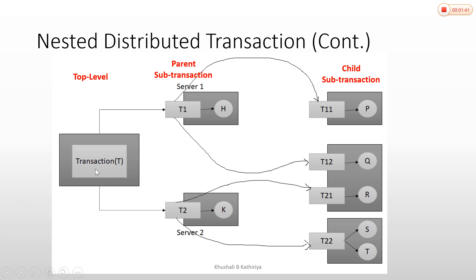Looking at the nested distributed transaction figure: the first one is the main transaction T at the top level. Transaction T is divided into two sub-transactions T1 and T2 — T is the parent transaction of T1 and T2. Now T1 is divided into T11 and T12, and T2 is divided into T21 and T22. So T has four child transactions at the second level.